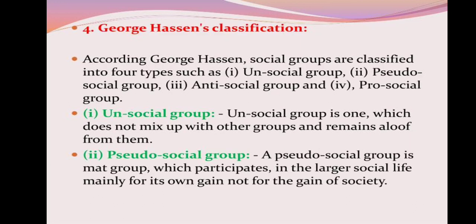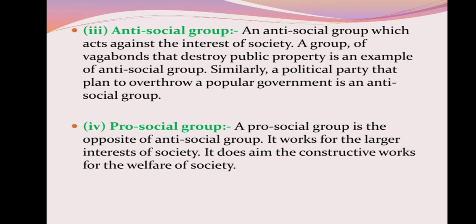George Hazine's classification divides groups into four types: unsocial group, pseudo-social group, anti-social group, and pro-social group. An unsocial group does not mix with other groups and remains aloof. A pseudo-social group participates in larger social life mainly for its own gain, not for the gain of society. An anti-social group acts against the interest of society — a group of vagabonds that destroys public property, or a political party that plans to overthrow a popular government, are examples. A pro-social group is the opposite — it works for the larger welfare of society.